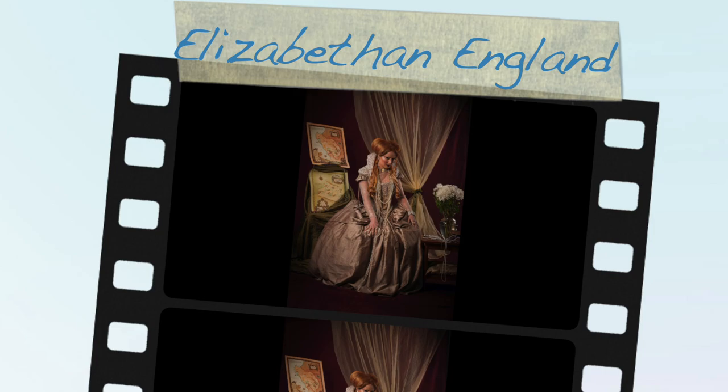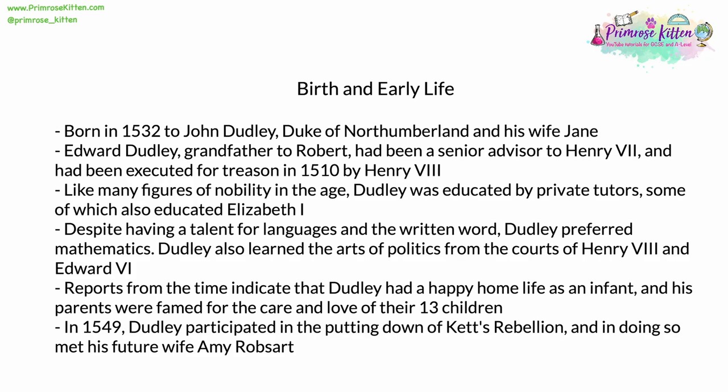Robert Dudley was born in 1532 to John Dudley, the Duke of Northumberland, and his wife Jane. Edward Dudley, the grandfather of Robert, had been a senior advisor to Henry VII and had been executed for treason by Henry VIII in 1510. Like many figures of nobility or royalty in the age, Dudley was educated by private tutors, some of whom overlapped and also educated the young Elizabeth I. Dudley had a talent for languages and the written word, which was important for boys of the age.